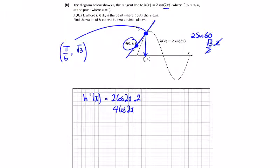So we're going to get 4 cos 2x, and the slope of this line, we can tell that pi over 6, we can tell what the slope is.